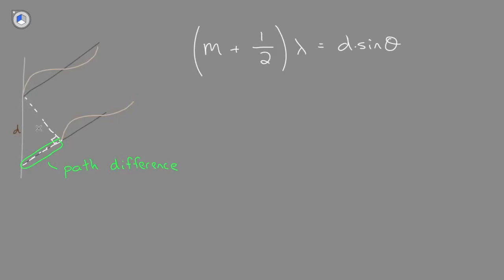Here we have the distance between two slits, our angle theta. And using trig, we should be able to see that the path difference here, PD, can be found using sine and this hypotenuse D.